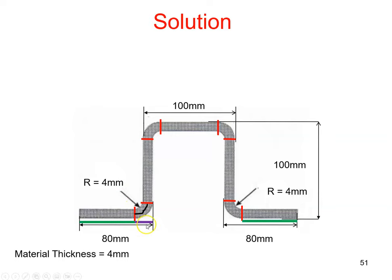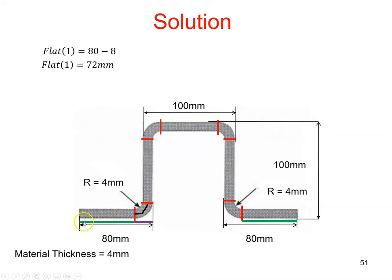Now that we have the setback, we can work out this distance here. This is Flat 1. If this is 80 millimetres and the setback is 8 millimetres here, then this distance here in green — here and here — is 72 millimetres.